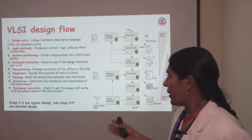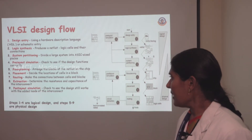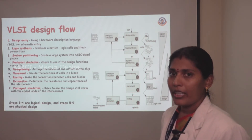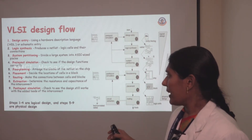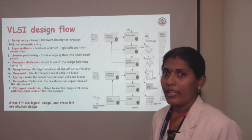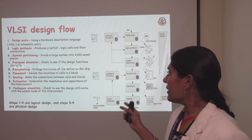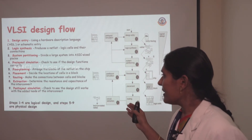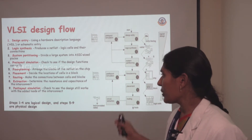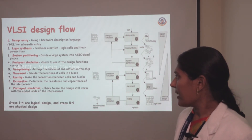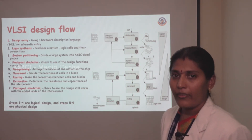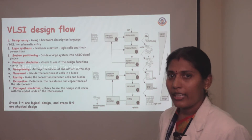After everything is verified, we move to floor planning — we arrange the blocks of the netlist on the chip. After that, we move to placement, where we decide the location of all the cells in the IC. Next is routing, where after placing our cells, we interconnect all the cells and blocks. After routing, we move to circuit extraction, where we determine the resistance and capacitance of the interconnects of our designed circuit.